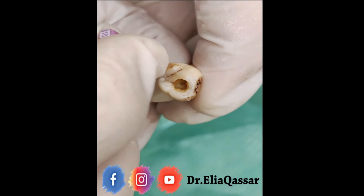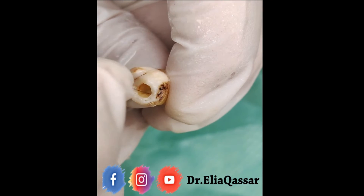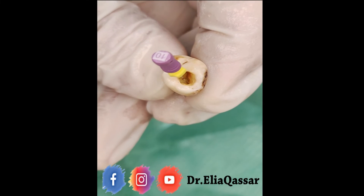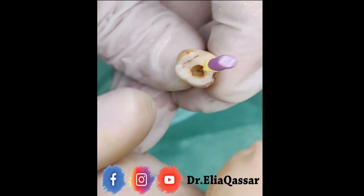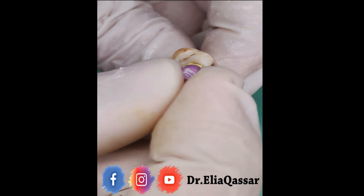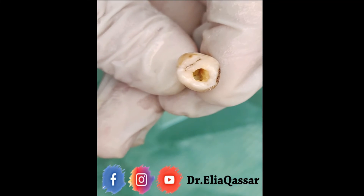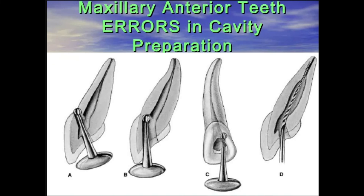As you see, all the canals are now visible: the first mesiobuccal, the second mesiobuccal, the distobuccal, and the palatal canal. Very simple and easy steps. On my next video I will be talking about the mistakes that could happen while accessing maxillary teeth and how to avoid them. Thank you.